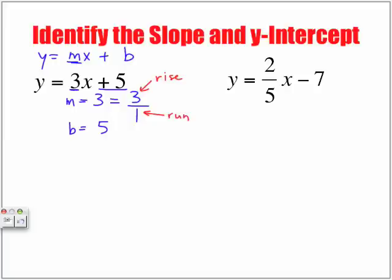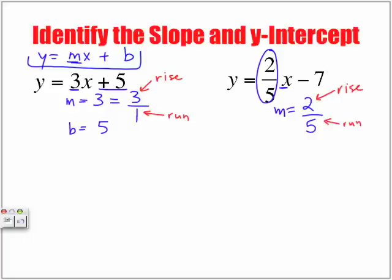Let's look at another example here. Y is equal to 2 over 5x minus 7. Again, the value here in front of x when in this format here is our slope. So our slope value, our m, is 2 over 5, which, because it's already in fraction form, rise, run. And our b-value, which is our y-intercept, is equal to negative 7.